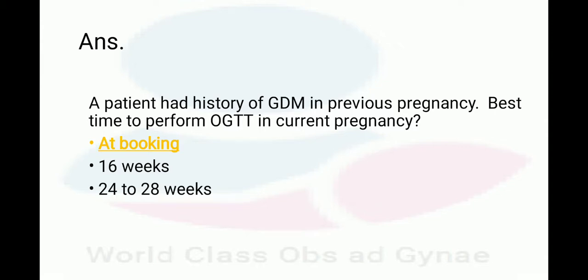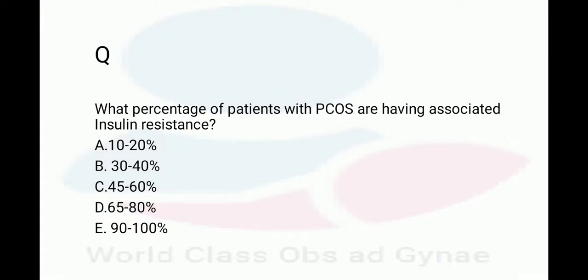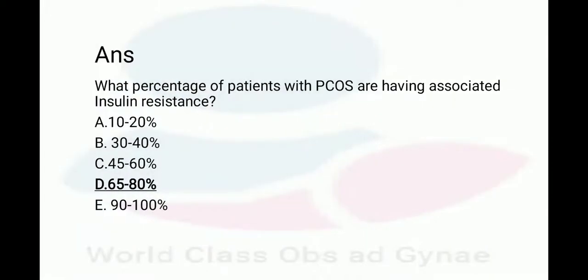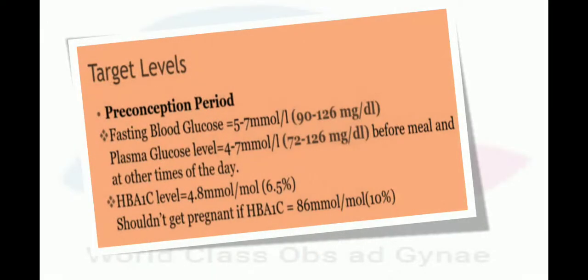Another question: what percentage of patients with PCOS have associated insulin resistance? The answer is 65 to 80 percent. Regarding target levels in the preconception period: fasting blood glucose should be 5 to 7 mmol/L (90–126 mg/dL), plasma glucose should be 4 to 7 mmol/L (72–126 mg/dL) before meals. HbA1c should be 48 mmol/mol (6.5%), and patients should not get pregnant if HbA1c is 86 mmol/mol (10%).